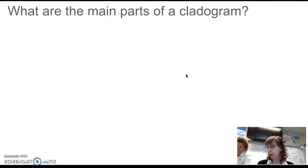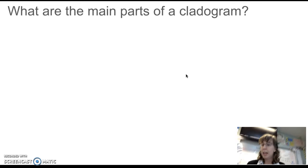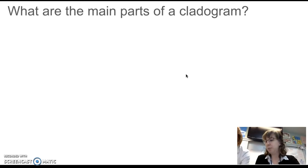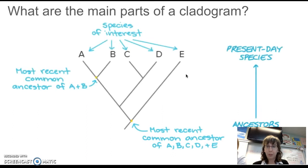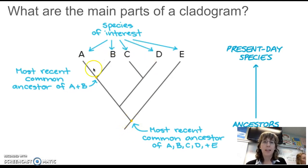So what are the main parts of a cladogram? You should have done this with station two. Here are the main parts: up top you have your species of interest, which is present-day species, and then going back in time, going to ancestors. At every branch point you have common ancestors. This means that at this point in time, these organisms or species diverged from this species that eventually turned into present-day E.